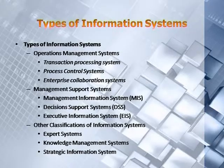What are the types of information systems? There are various types, but we will talk of the major ones. Information systems can be divided into three major categories. The first category is operations management systems, which can further be divided into three subcategories: transaction processing systems, process control systems, and enterprise systems.